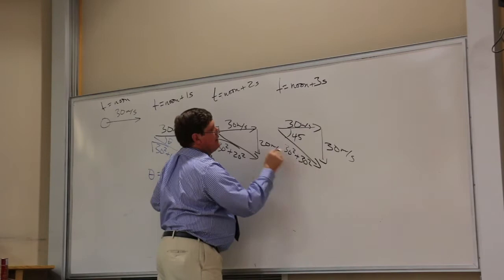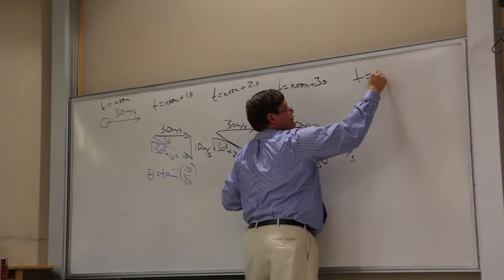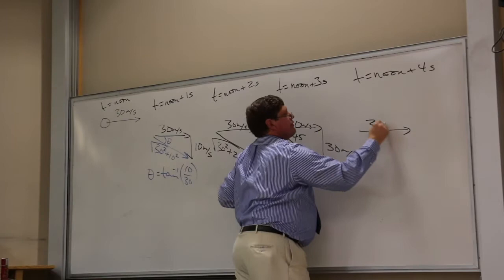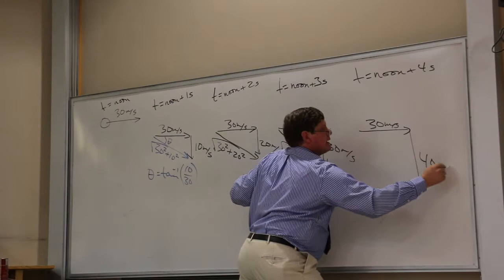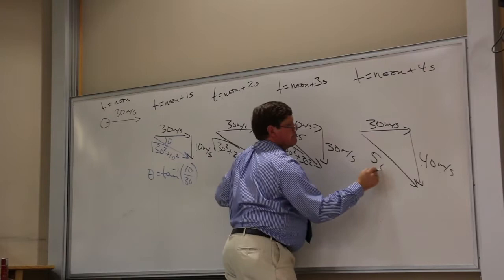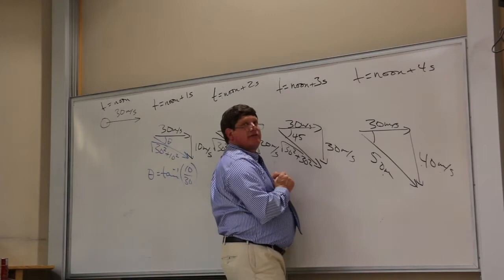This is right before it lands. At t equals noon plus 4 seconds, the x part is still 30 meters per second and the y part is now 40 meters per second. That's a 3-4-5 triangle, so the total speed is 50. The angle — not 37 degrees, because 37 is when the 30 is on the other side — it will be 53 degrees.